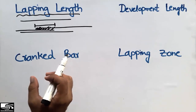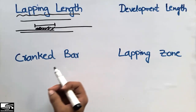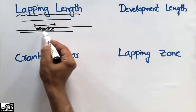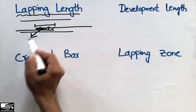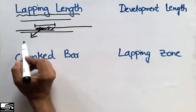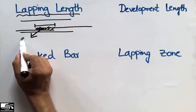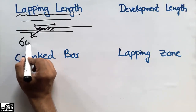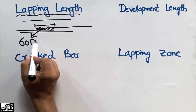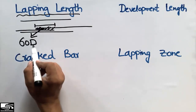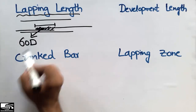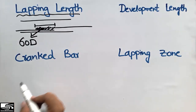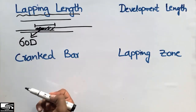This lapping length should have a standard length given to us by different codes. In the case of a beam, this overlapping length should be equal to 60 times the diameter of the smaller bar.